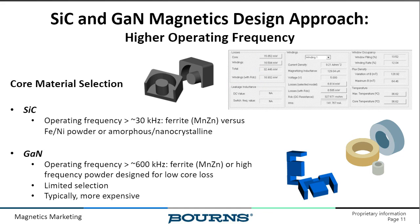Core material selection is the first decision in the design tree, driven by operating frequency. Before approximately 30 kHz, you can start taking advantage of ferrite materials for lower core loss in SiC applications. For GaN at operating frequencies above 500–600 kHz, ferrite is already standard. As frequency goes higher, core loss in ferrite increases and the selection of suitable materials becomes fewer, making the choice of truly optimized material more challenging at multi-megahertz frequencies.